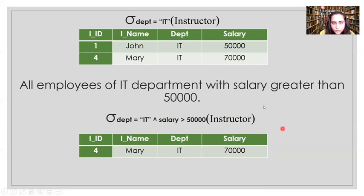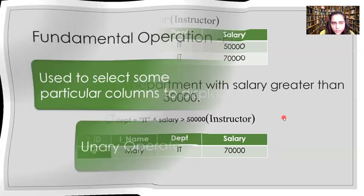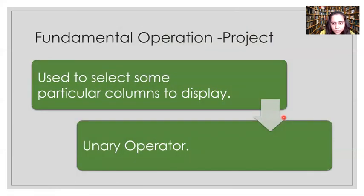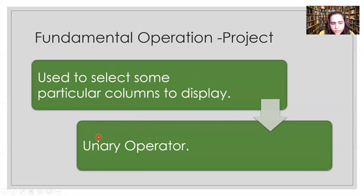The next fundamental operation in relational algebra is project. Project is used to select specific columns to display, whereas select is used to choose rows. So they are conceptually different — select filters rows, project filters columns. Like select, project is also a unary operator, so you only need to provide one table for it to work.